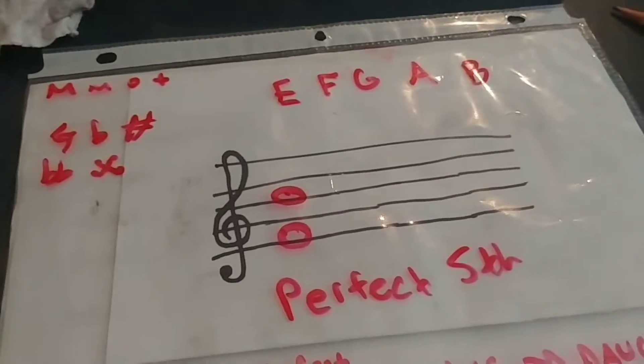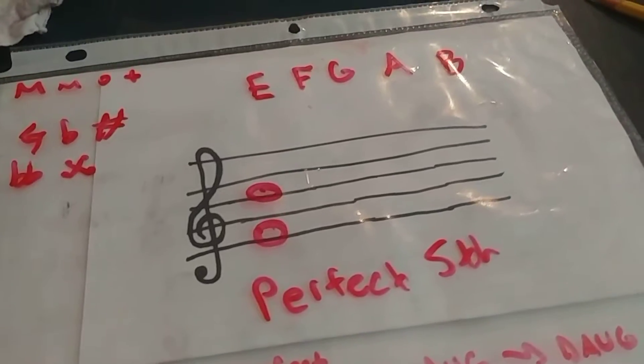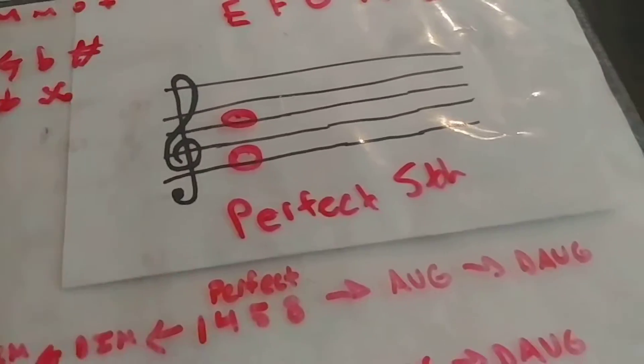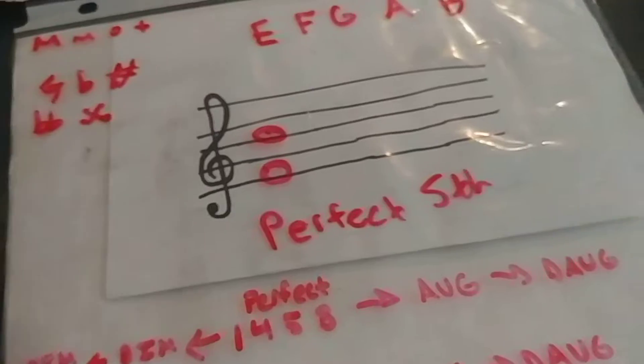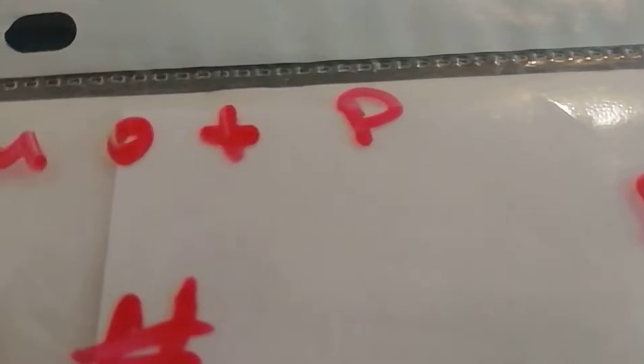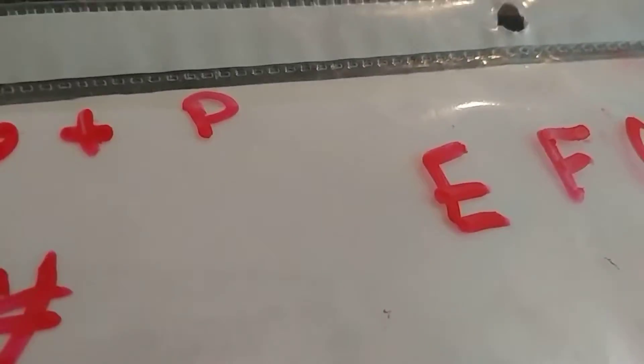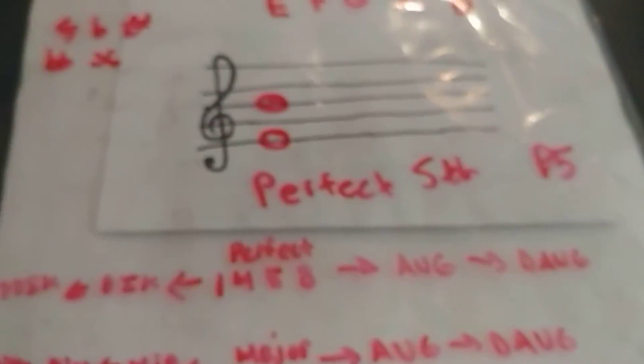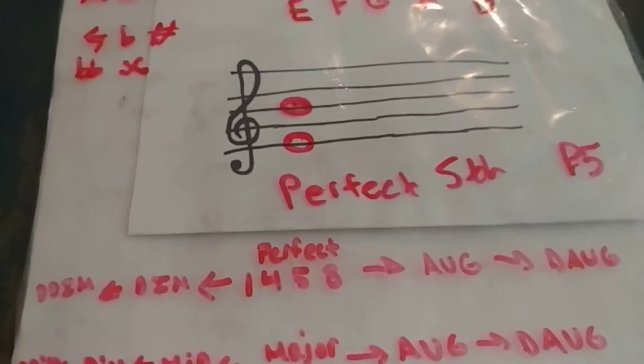Now, there are symbols for when you have something that's perfect, you just say perfect. Or you could do P5. Now, here are the other symbols. If you had something that was major, it's a capital M. Minor, lowercase m. If it's diminished, you would have a circle. If it's augmented, you'd have a plus. And P is perfect. As far as I know, for things that are doubly diminished or augmented, I don't know if there's a symbol for that. Usually, you would just write that.